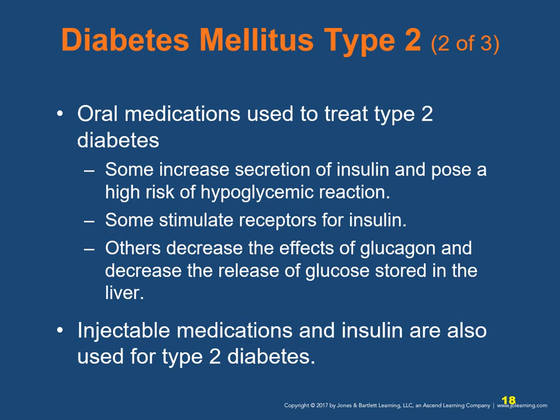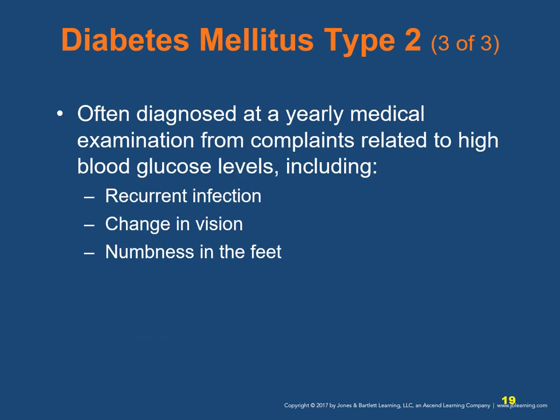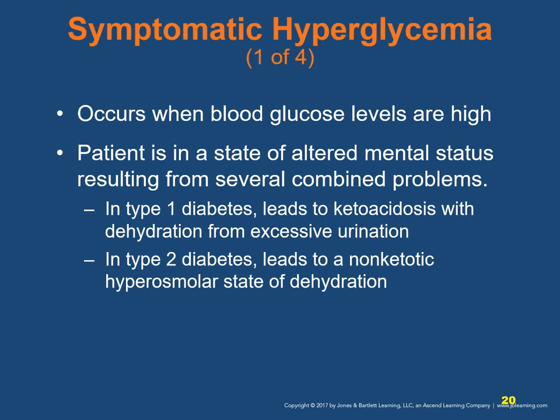Oral medications are frequently used to treat type 2 diabetes; some increase insulin secretion and pose a high risk of hypoglycemic reaction. Injectable medications and insulin are also used. Type 2 diabetes is often diagnosed at a yearly exam from complaints related to high blood glucose, including recurrent infection, change in vision, and numbness in the feet. Symptomatic hyperglycemia occurs when blood glucose levels are very high, placing the patient in an altered mental status resulting from severe combined problems. In type 1 it leads to ketoacidosis with dehydration; in type 2 it leads to a non-ketotic hyperosmolar state.